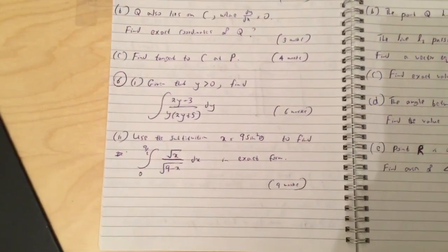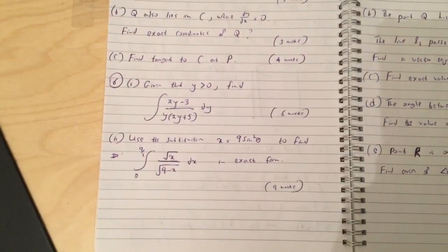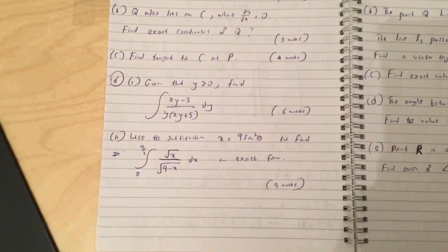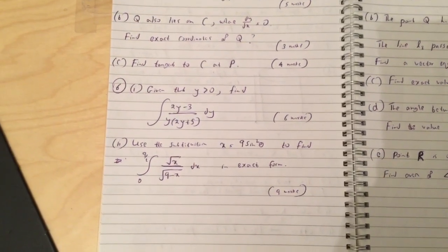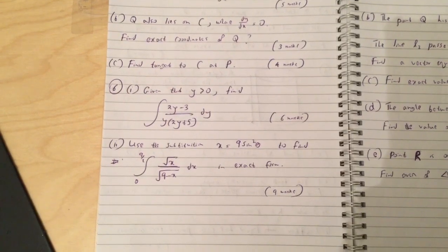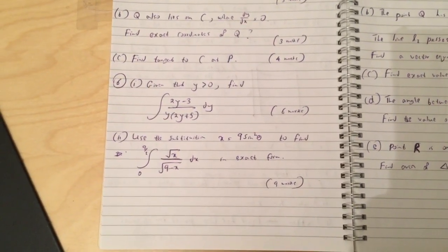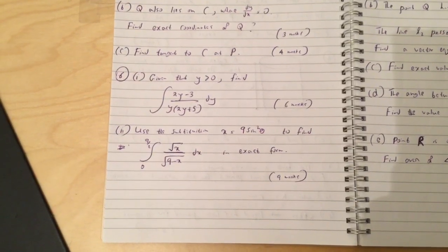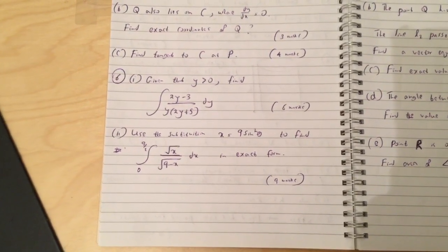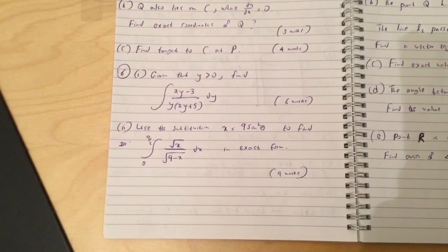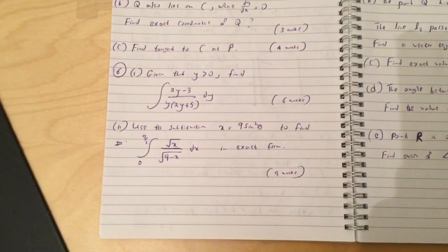Question 6: Given that y is greater than 0, find integral of 2y minus 3 over y bracket 2y plus 5 dy. Question 2: Use the substitution x equals 9 sine squared theta to find integral from 0 to 9 over 2 root x over square root of 9 minus x dx in exact form.